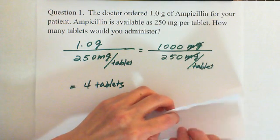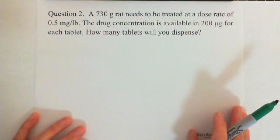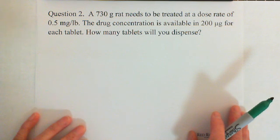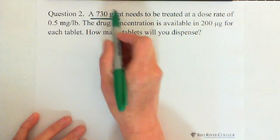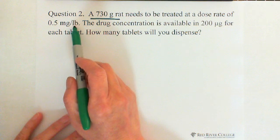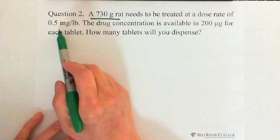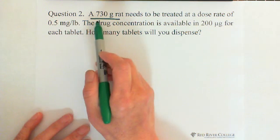The second question is sometimes related to body weight. A 730-gram rat needs to be treated at a dose rate of 0.5 milligrams per pound. A drug concentration is available in 200 micrograms per tablet. How many tablets will you dispense? The rat's weight is 730 grams, and the dose rate is 0.5 milligrams per pound — meaning for each pound of body weight, we need 0.5 milligrams of medicine. So first we need to find how many milligrams of medicine are needed for this rat.